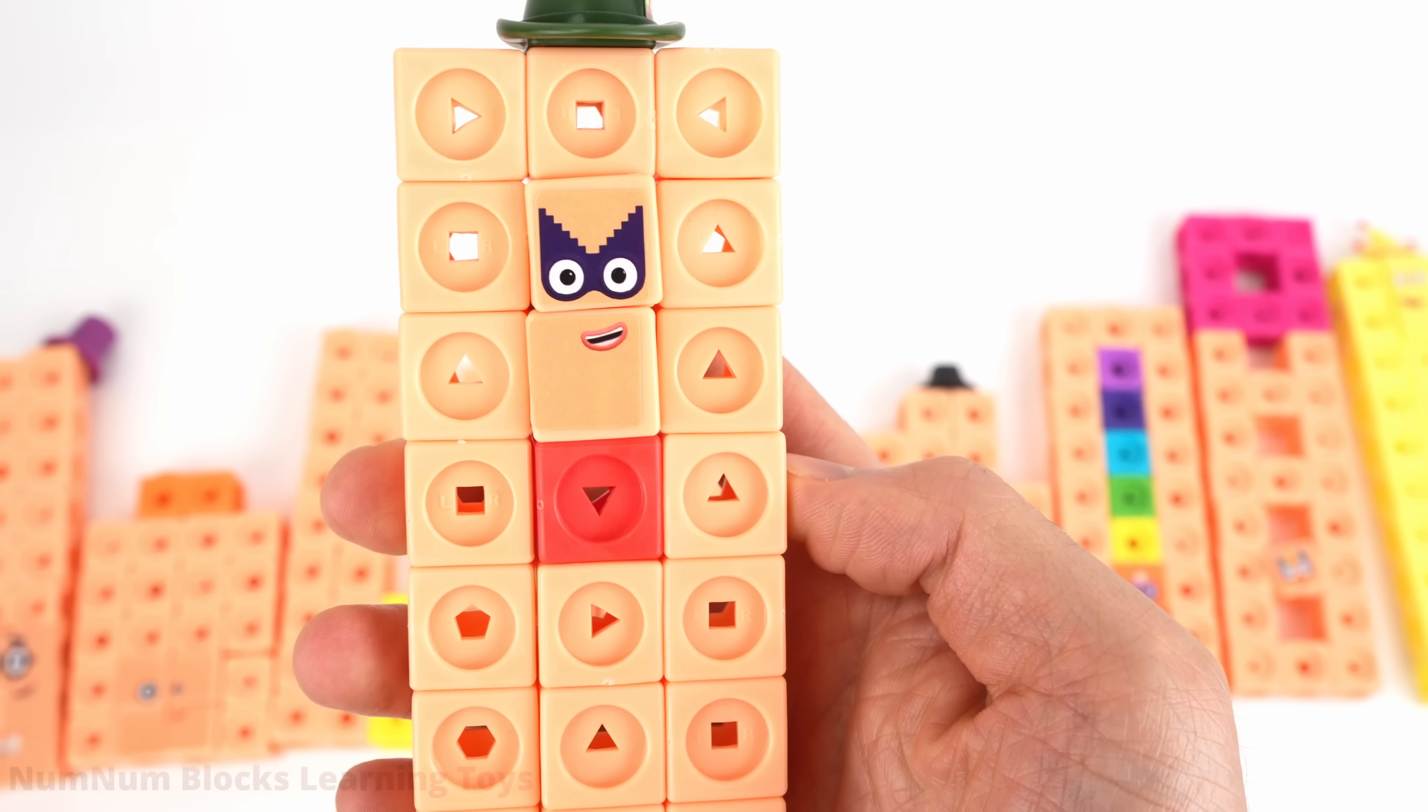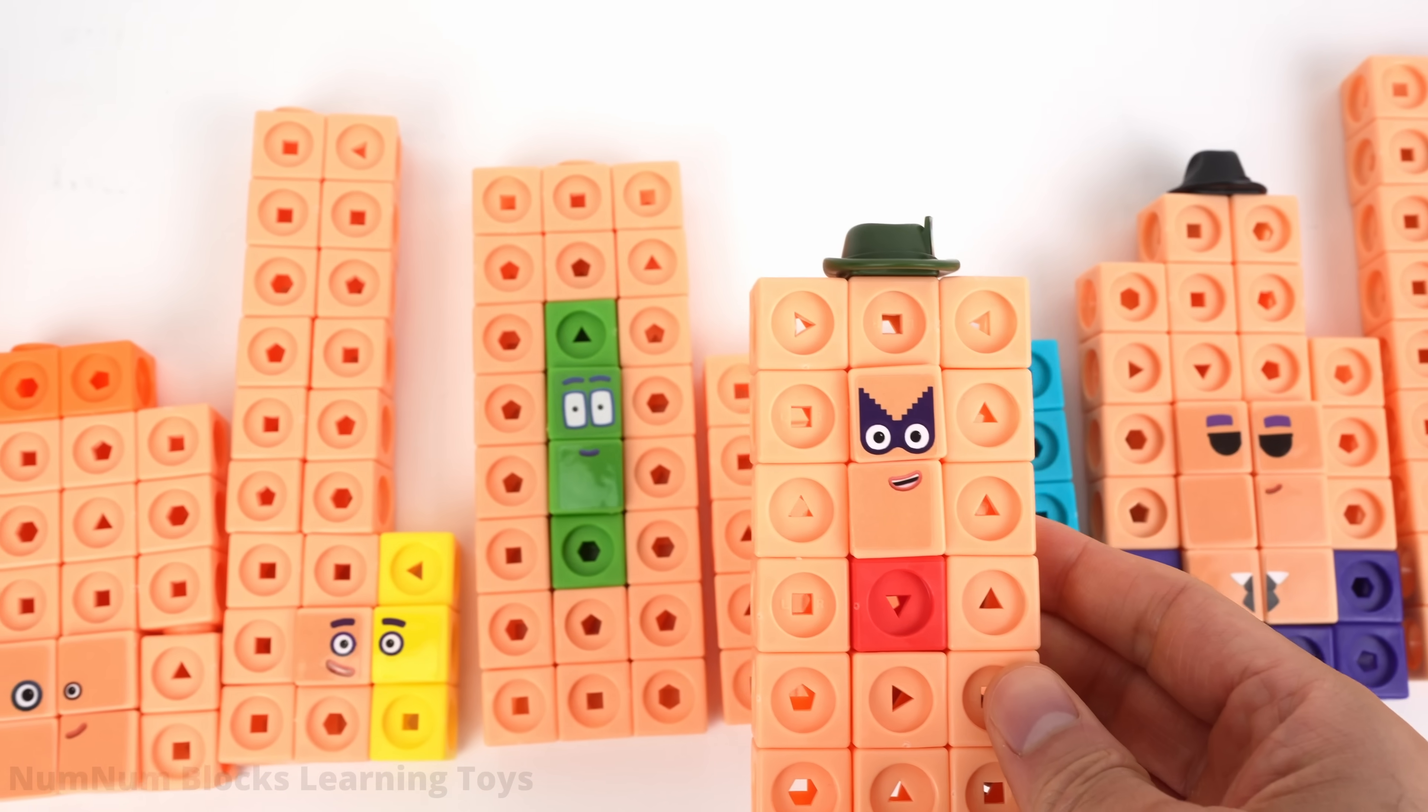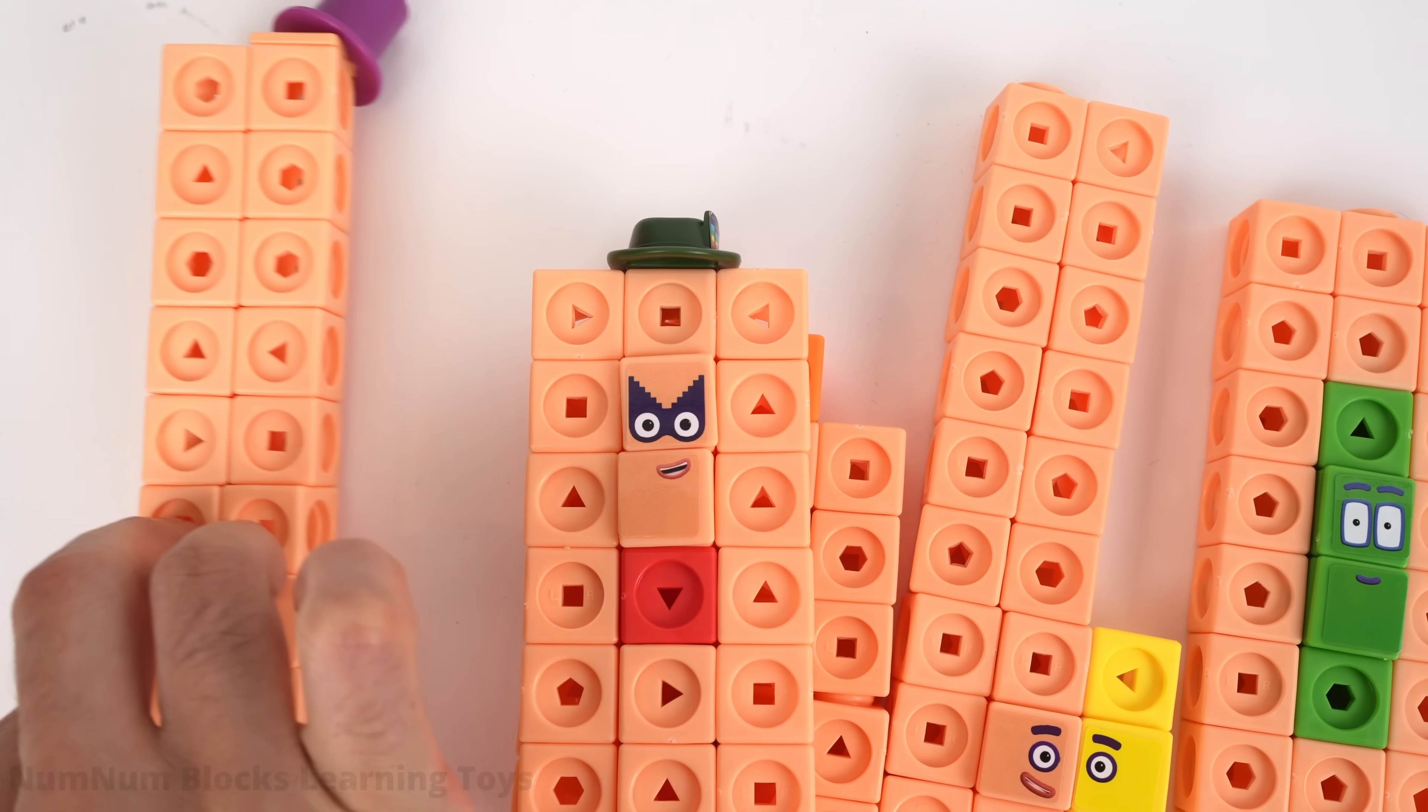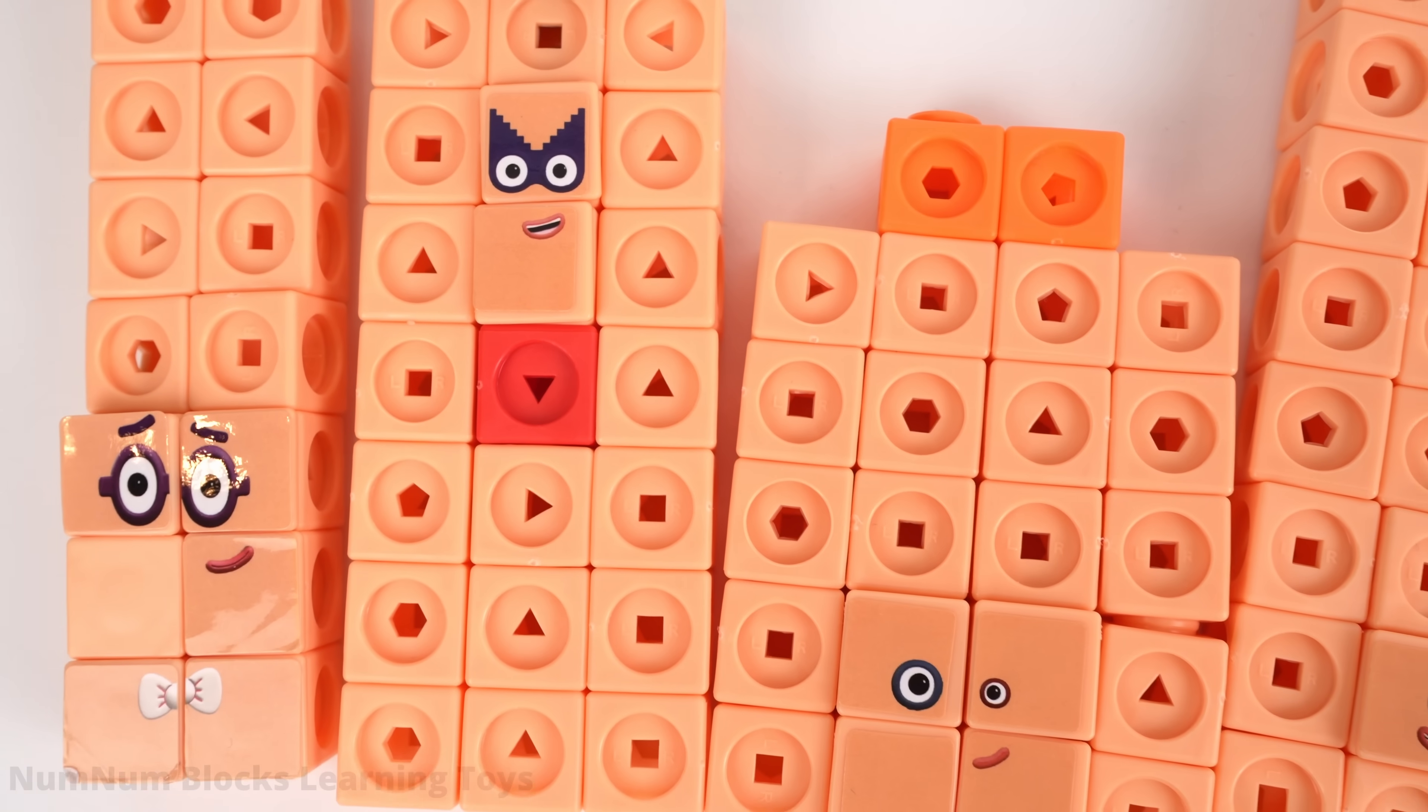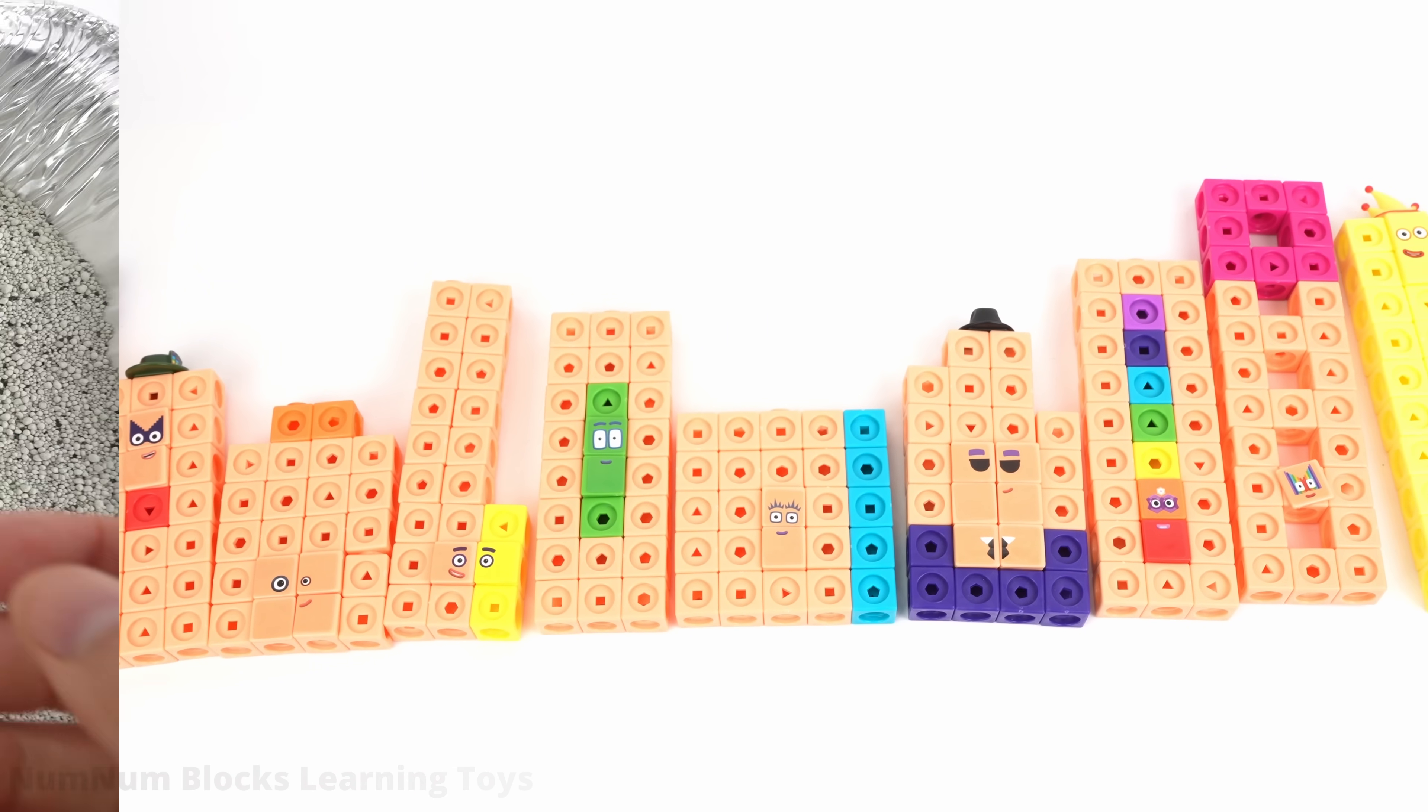21 is one more than 20. Let's find 20. Hello, hello. Did somebody say 20? There's 20. 21 goes to the right of 20. It looks like there's only one more odd number to rescue. Let's go find the final odd number.